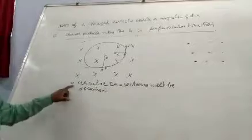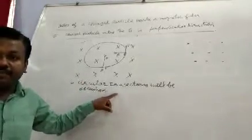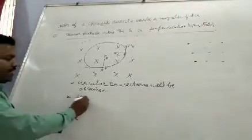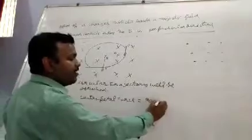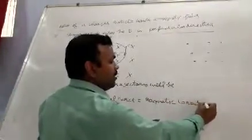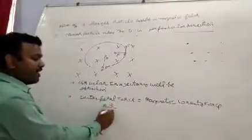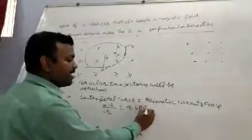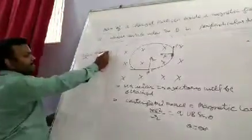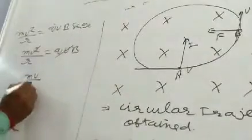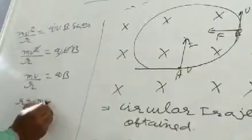As you know, in circular trajectory centripetal force is required. The centripetal force will be provided by Lorentz force. Centripetal force is mv²/r and this is qvB sin theta. Theta is 90 degrees, so mv²/r equals qvB sin 90. Sin 90 is 1, so mv²/r equals qvB. From this, v equals mv/r times qB, giving r equals mv/qB. This is the radius of the circular path.